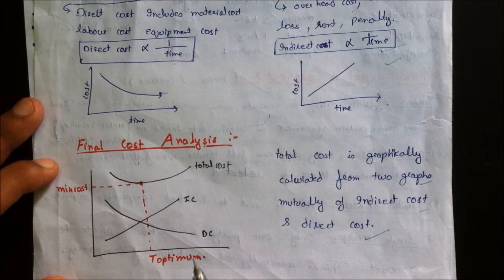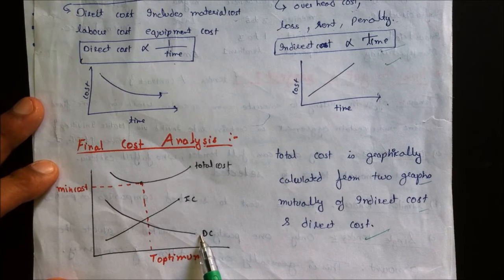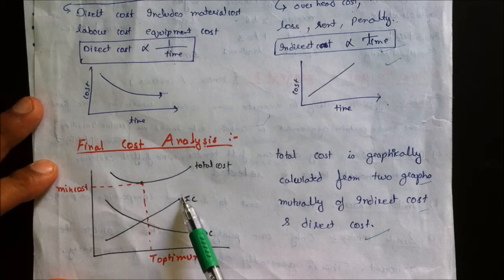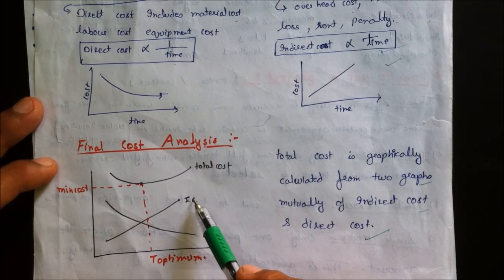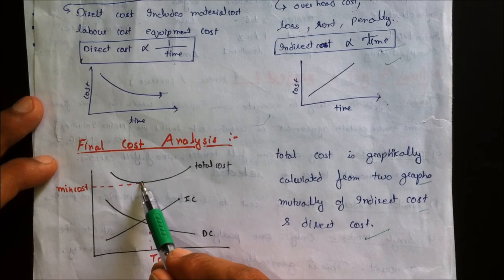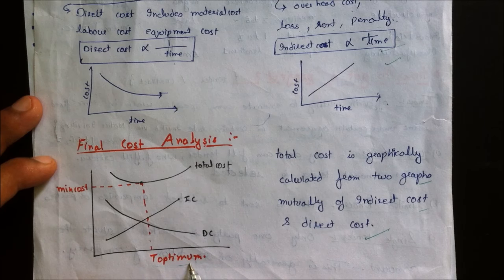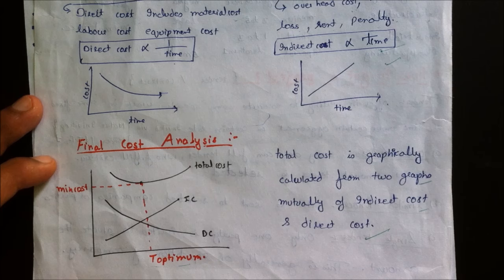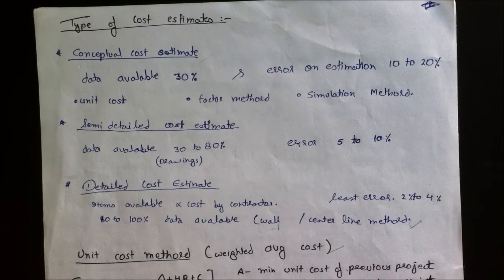Since direct cost decreases with time and indirect cost increases with time, we plot an optimum curve which is the summation of both. The least value on this combined curve gives the minimum total cost and the optimum time to complete the project. This total cost is graphically calculated from the two curves.